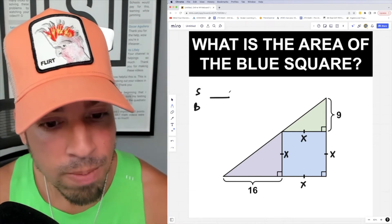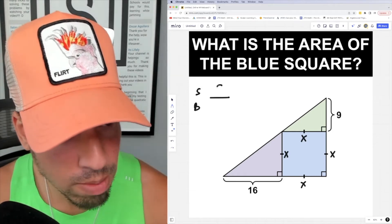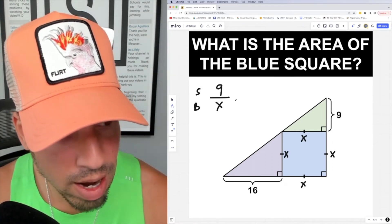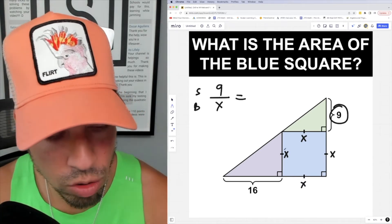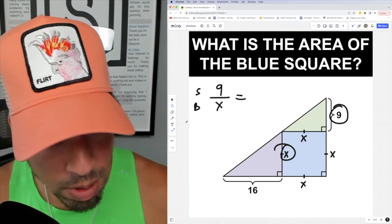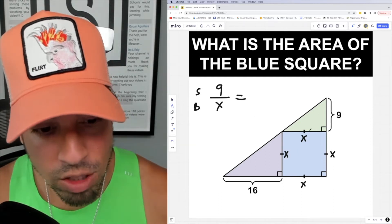So we'll call them x. I know I have a certain relationship: nine over x is equivalent. That's small to small, but from the small triangle to the big triangle, that is equivalent to...